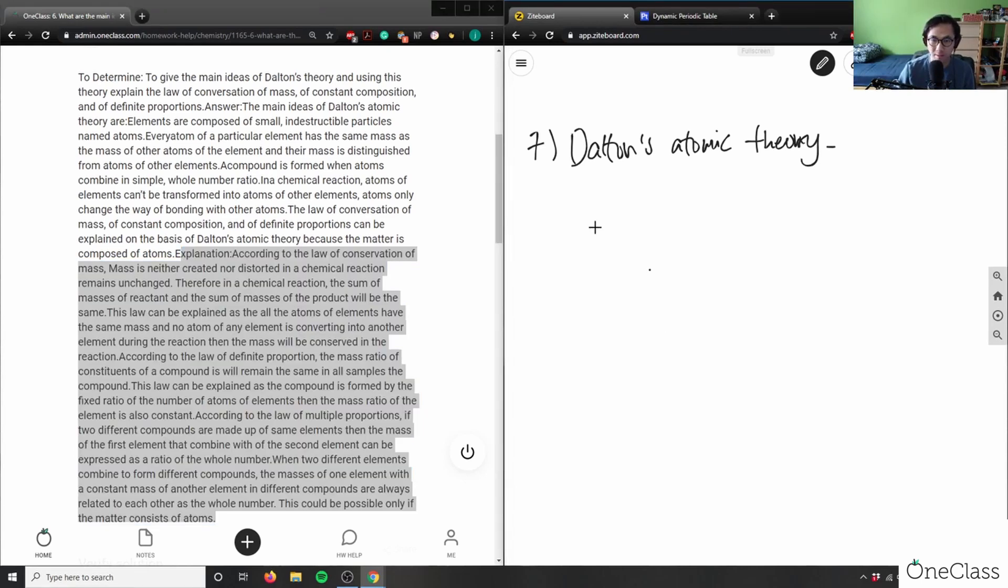I'm going to use an example here. I have H2 gas plus O2 gas yields water. As you can see, I have two hydrogens here and two oxygens here, and then on the product side I have two hydrogens and only one oxygen.